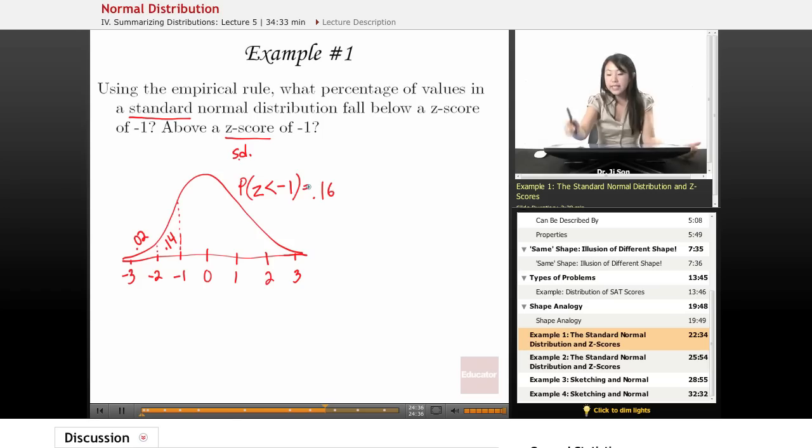Now, once you know this, it's asking, what about above a z-score of negative one? So now it's talking about this area.